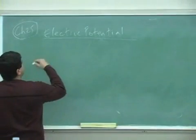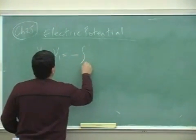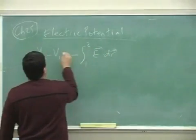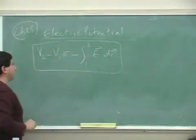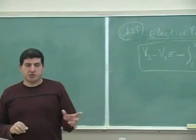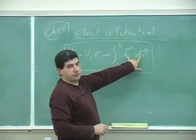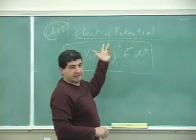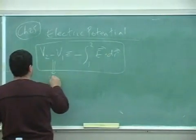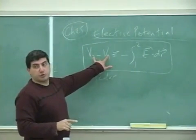Here's how electric potential is officially defined. This is the definition of electric potential. Electric potential is a scalar because it's the dot product of two vectors. So from this we see that it is defined as a scalar quantity — a scalar whose meaning is associated with the difference between two numbers.